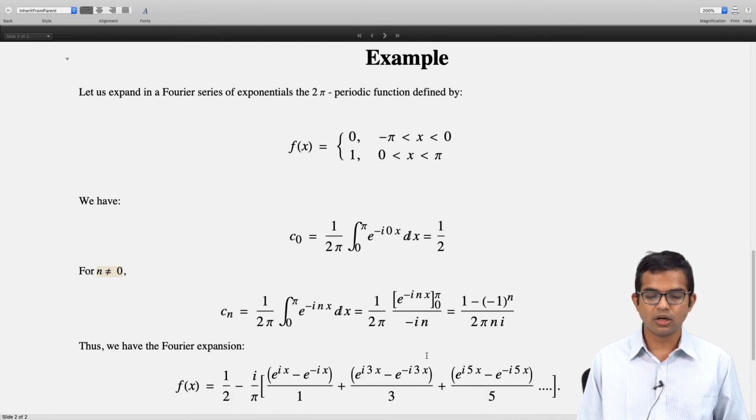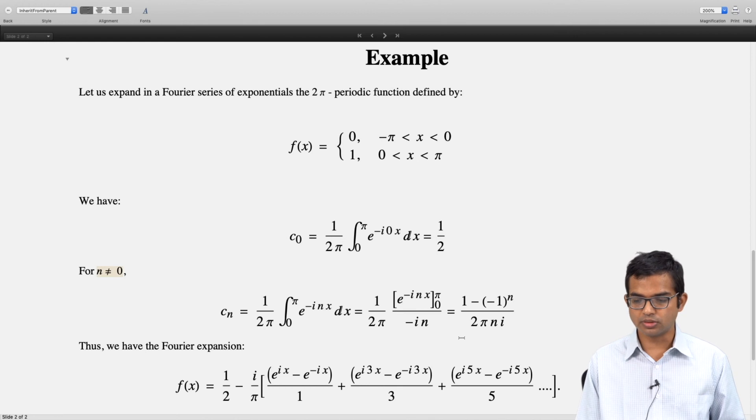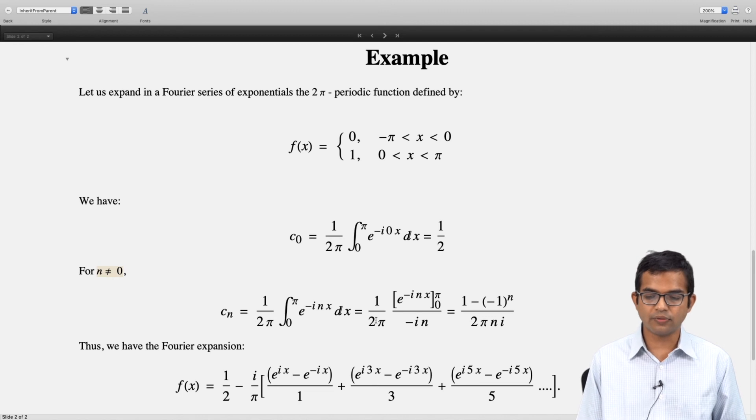Thus, we have this Fourier expansion. If you collect all these terms carefully, you can pull out a π in the denominator and there is an i in the denominator which you can shift to the numerator with a minus sign. The factor of 2 also cancels with one of the factors inside.